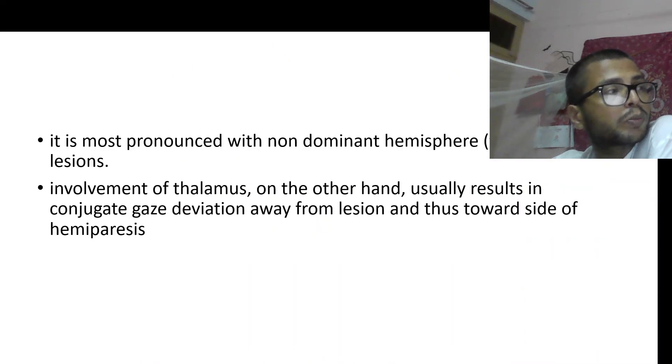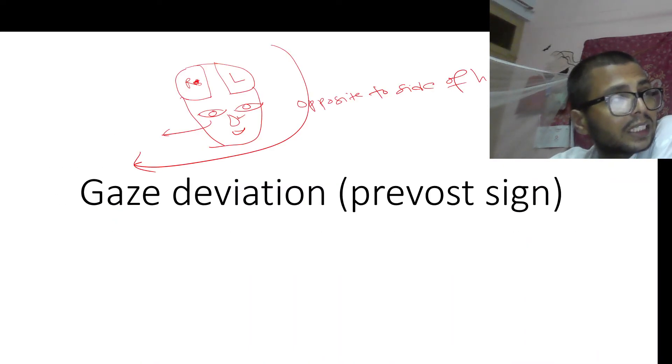And this is in contrast to involvement of the thalamus. For example, if there is a stroke in the thalamus on the right side, then there is conjugate eye deviation towards the opposite side. So this is in contrast to cerebral hemisphere involvement. This is another point that you need to know.